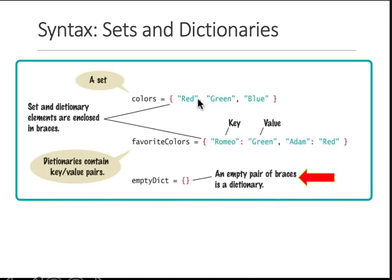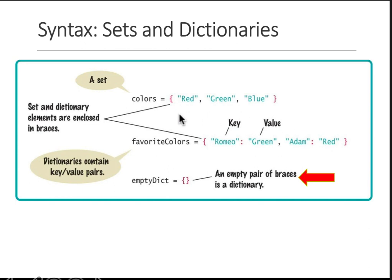For example, colors are red, green, and blue, and favorite colors — these are both sets. How do you create a dictionary? You create a dictionary using the colon character. So keys and values: this is a set of colors, this is a dictionary. In a dictionary, you have a key, then you put a colon and a value, then comma, key value. The first thing is key, the second thing is value. This is one key-value pair, this is another key-value pair. If you want to create an empty dictionary, you use empty curly braces.